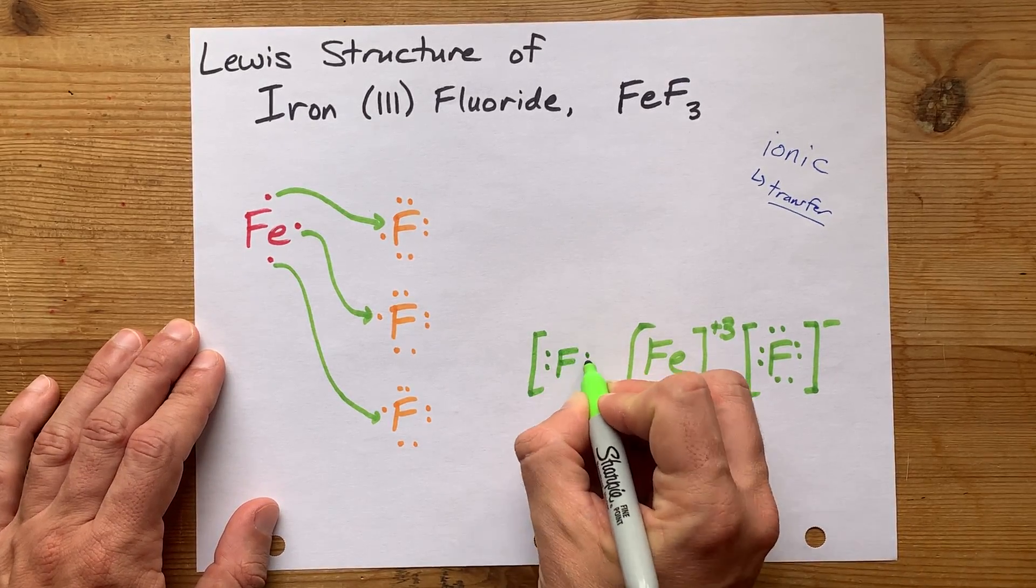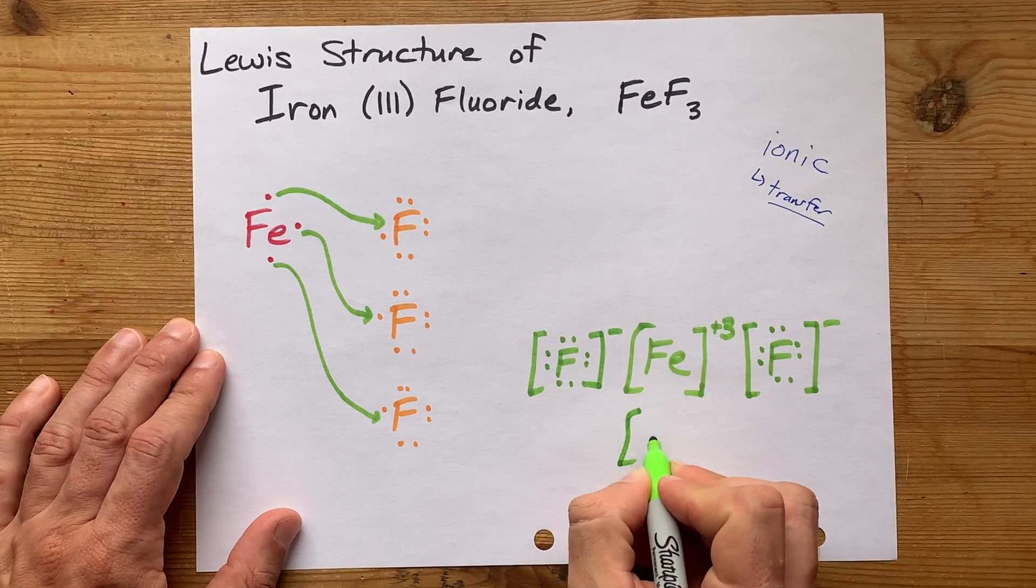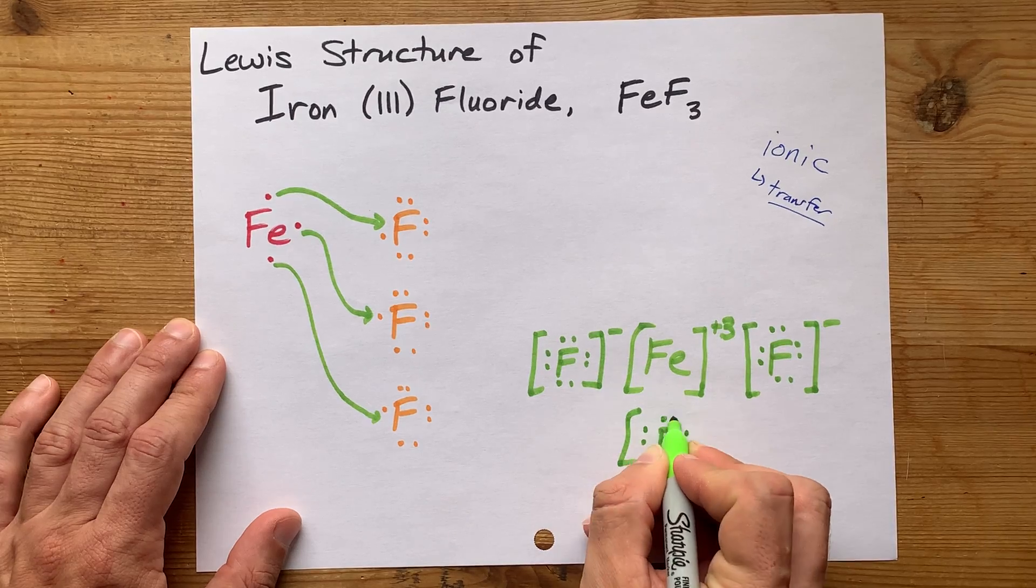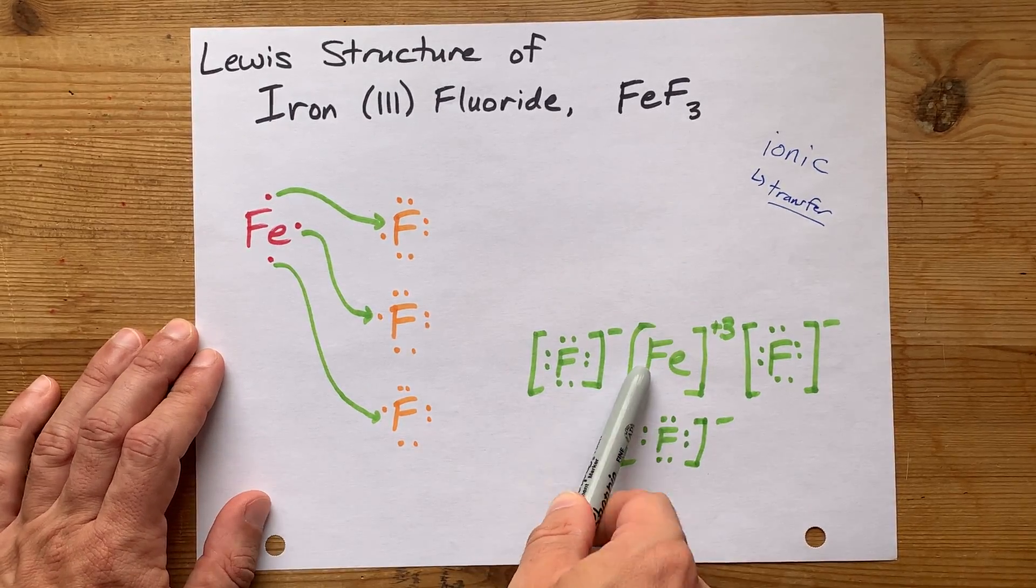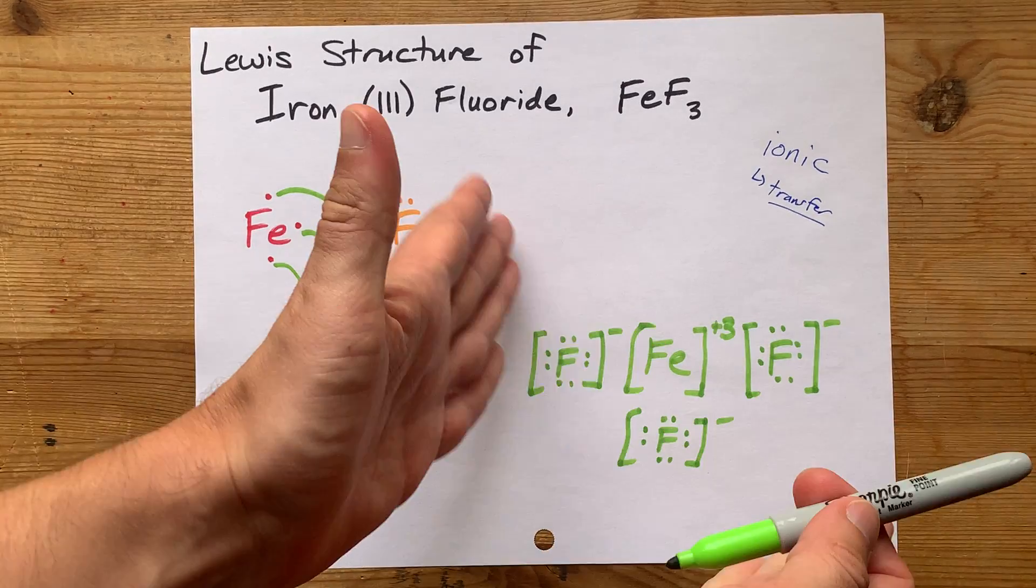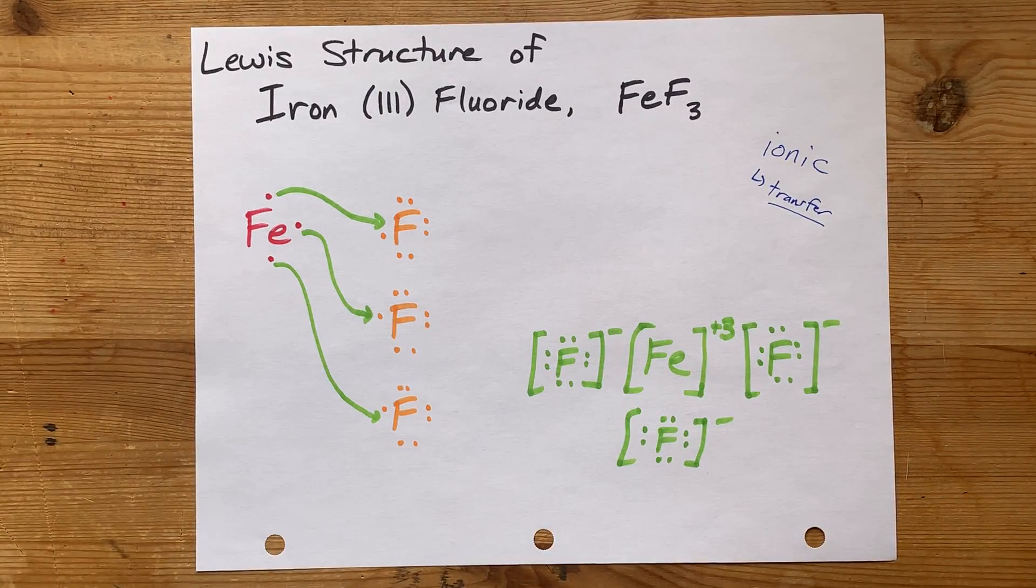Now, don't be lazy. Instead, I want you to redraw that fluoride three times. Well, three total, so you're only redrawing it twice. But you know what I mean. FeF3. That's the Lewis structure. We did it together. I knew you could. Best of luck.